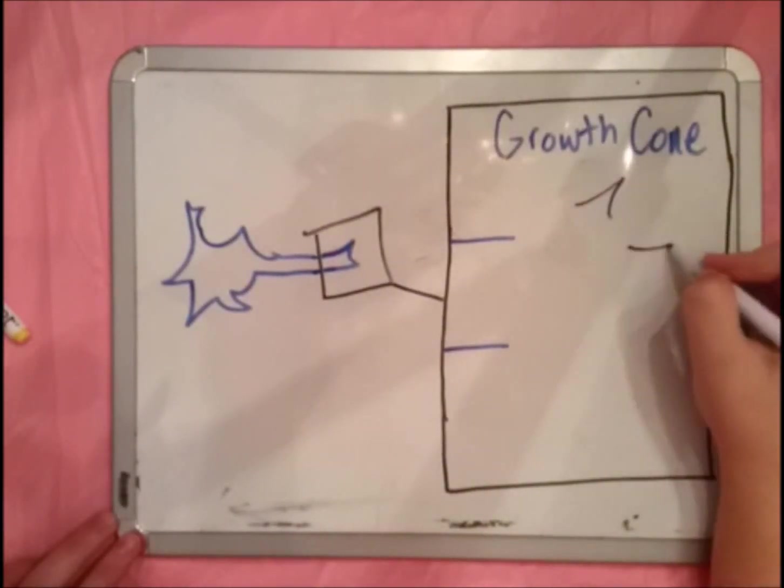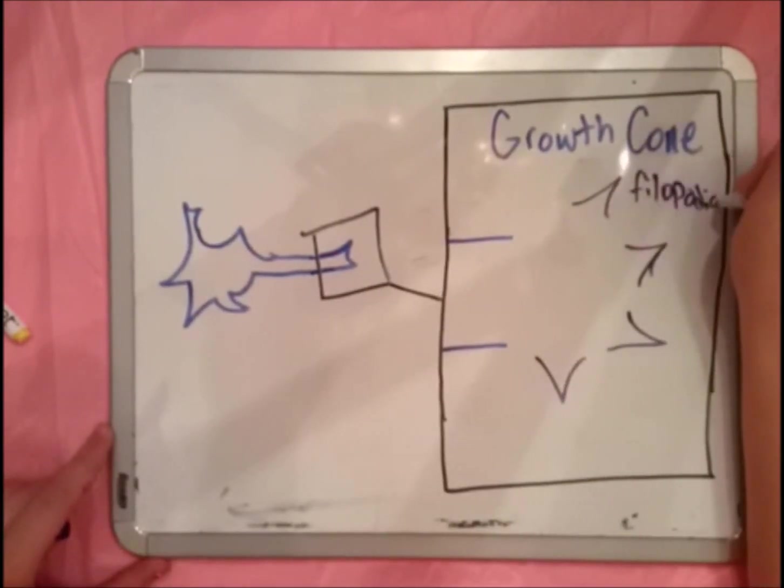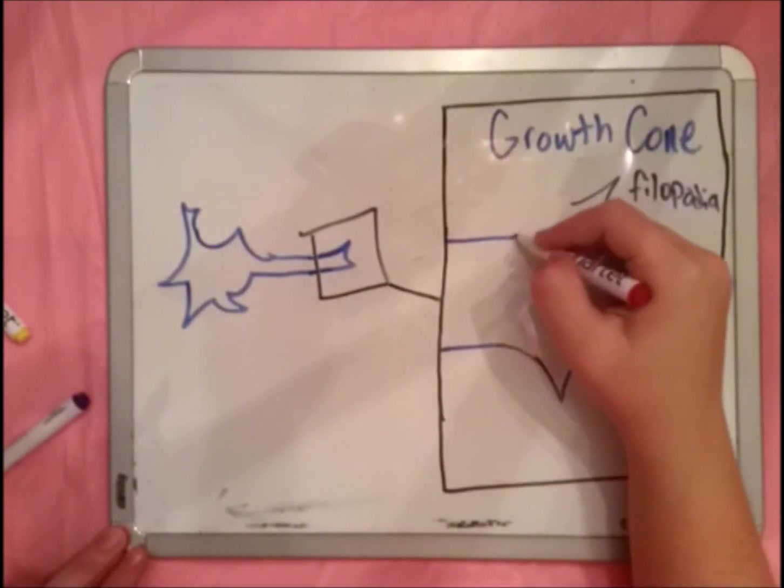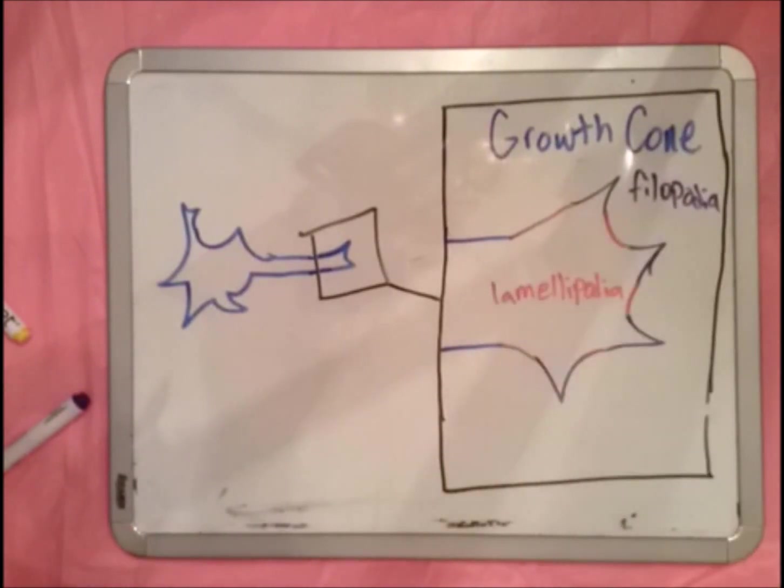The growth cone consists of two main parts, the filipodia and lamellipodia. The filipodia are the spiky parts and the lamellipodia are the webbing in between the filipodia.